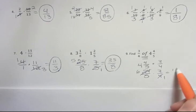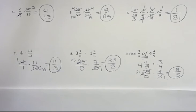And 6 times 3 is 18, 5 times 1 is 5. And I get 18/5. Another improper fraction.